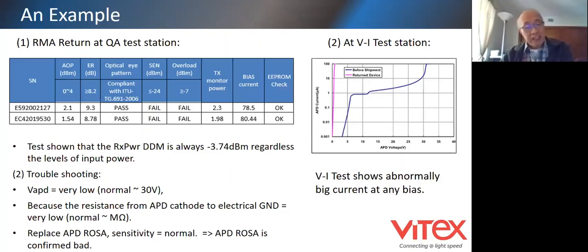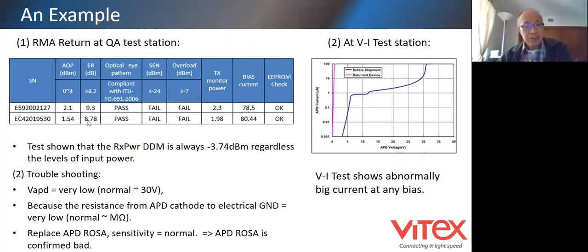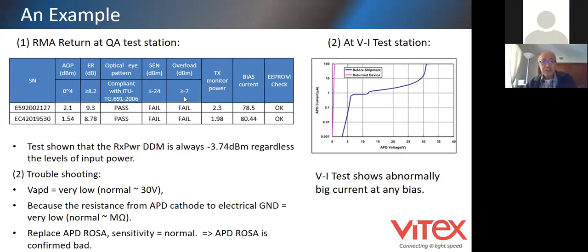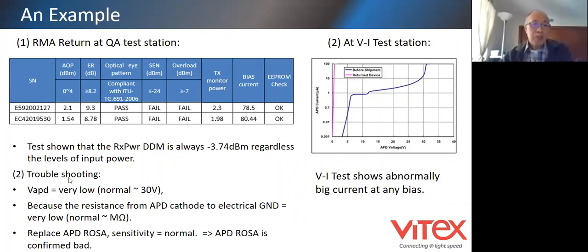Here I want to show examples of how the process is laid out to troubleshoot APD damage in a standard QA environment. We received two part numbers with the same type of failure. They go through QA testing first for RMA. Everything is fine on the transmitter side, but everything on the receiver side fails: sensitivity fail, overload fail, and DDMI on the receiver power input fail. Those three combined together almost certainly indicate APD damage, because when you transfer input power the number remains the same.